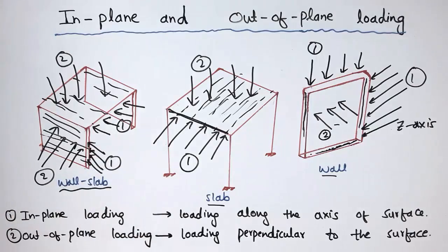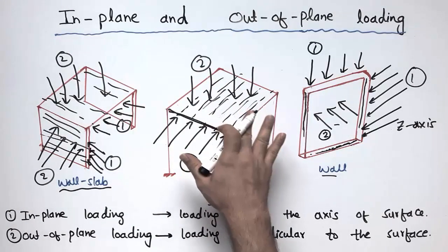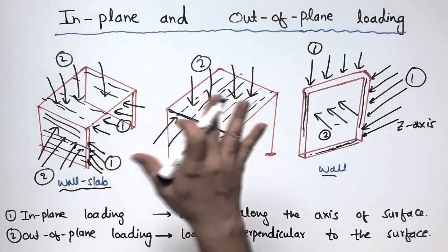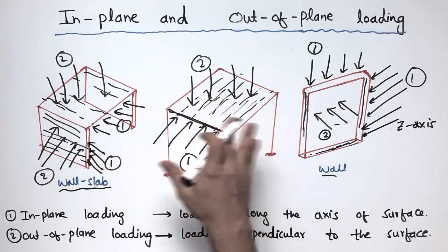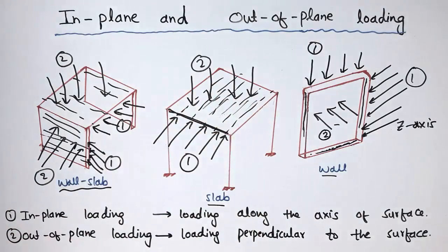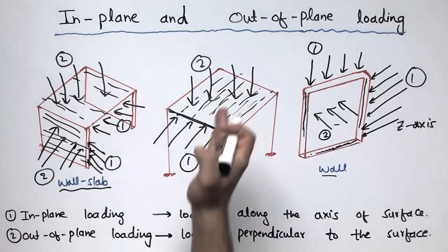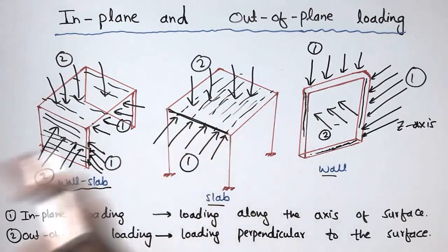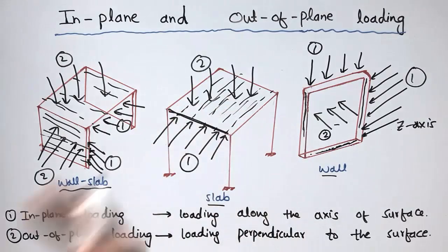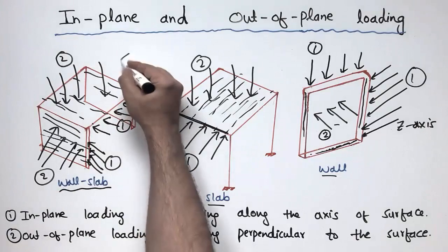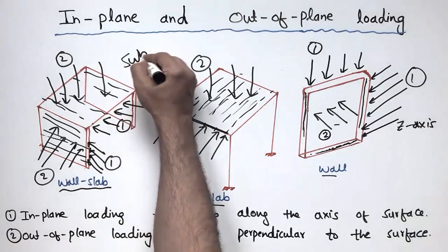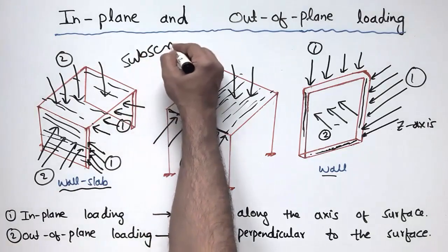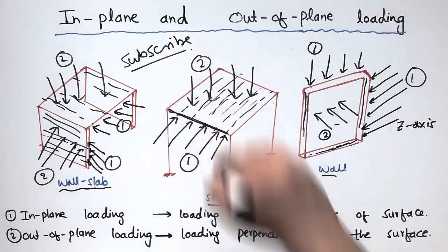Hope you guys understand the main difference: the load perpendicular to the surface is called out-of-plane loading, while the load acting along the axis of the wall surface or slab surface is known as in-plane loading. Hope you understand, and don't forget to subscribe to the channel for daily 7 Engineering videos. Thank you for watching.